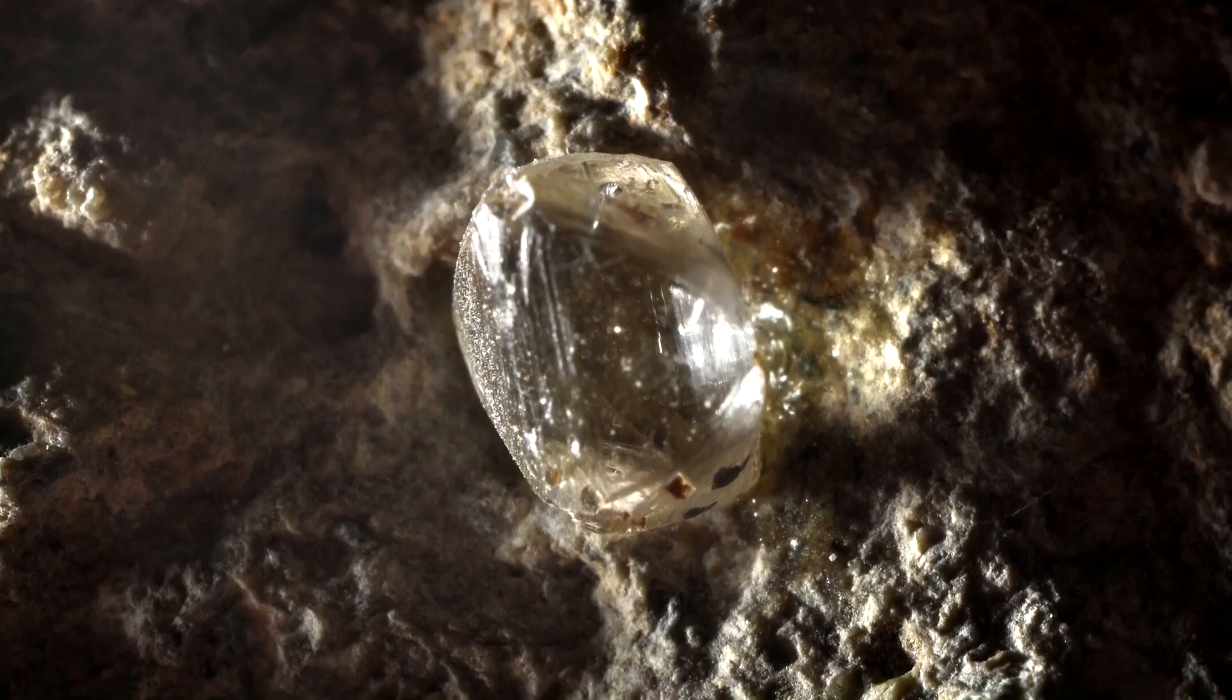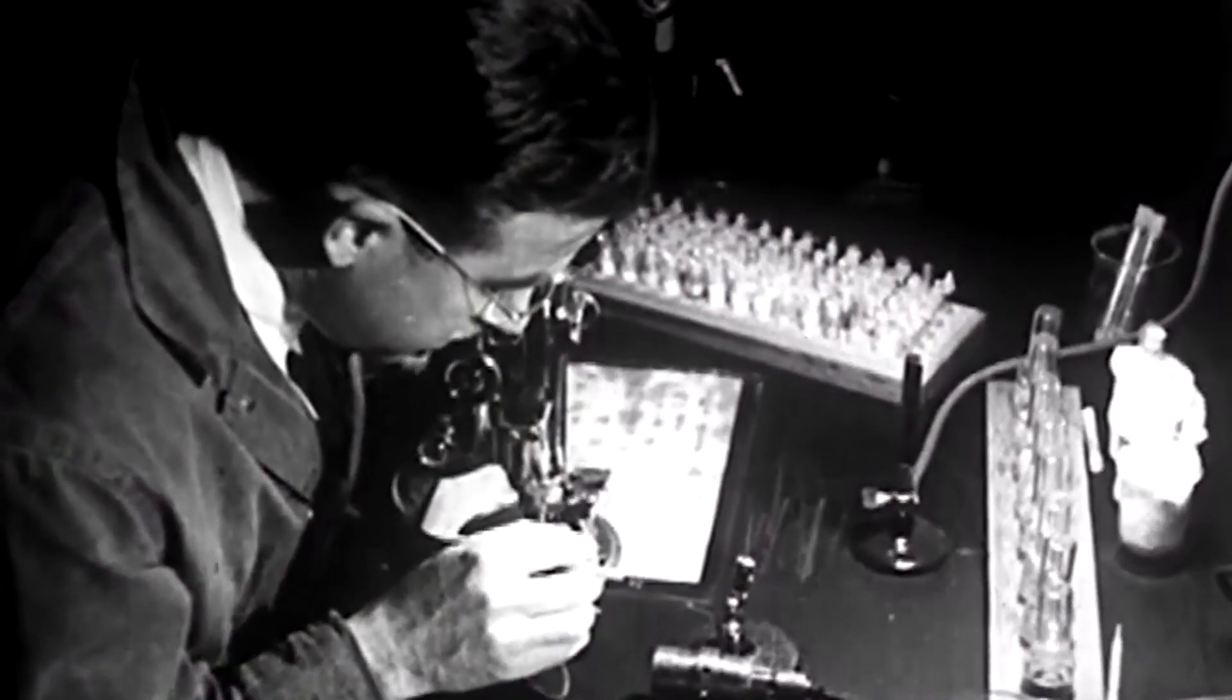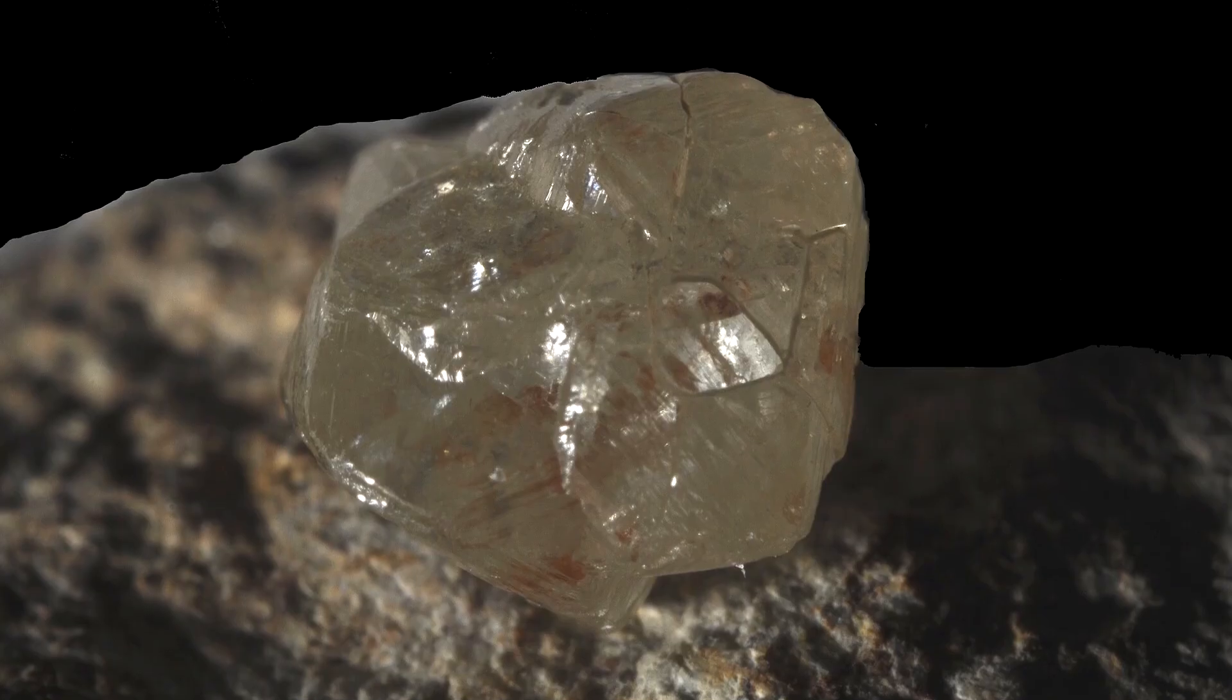When a diamond forms naturally, several impurities like nitrogen enter the stone, creating unique growth patterns and tiny mineral bubbles inside it.